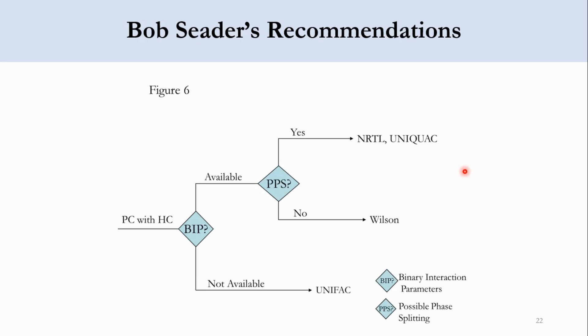Going to Figure 6, for polar compounds with hydrocarbons, we check BIP, which is binary interaction parameters. If these are not available, use UNIFAC. If these are available, check for possible phase splitting.